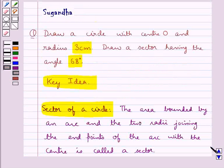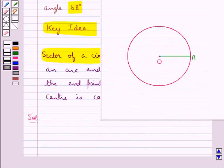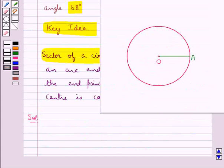First of all, we will draw a circle with center O and radius 3 cm. So, this is a circle with center O and this OA is the radius of the circle where OA is equal to 3 cm.